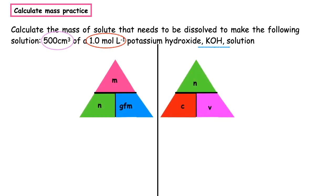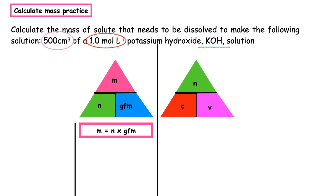Remember: 'my nice granny never cuts violets'. Step one — underneath the appropriate triangle we write what the question is asking us to work out. In this case it wants us to work out the mass, so underneath the mass triangle we write m = n × GFM. We look at the information given: have we been given the number of moles? No. Have we been given the gram formula mass? No, but we have been given a formula which means we can calculate the gram formula mass.